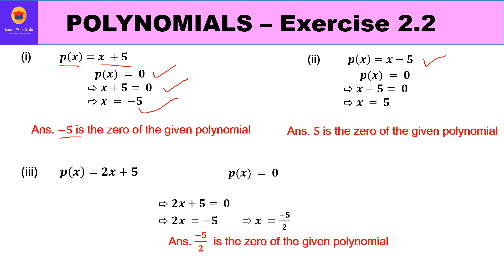For part two, p(x) = x - 5: set x - 5 = 0, so x = 5. For part three (implied), equating gives x = -5/2. Therefore -5/2 is the zero of the given polynomial.